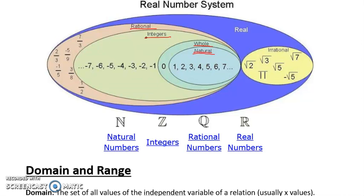And integers. Integers are any number from negative infinity to positive infinity, including zero, that are whole numbers. And then we have rational numbers. Rational numbers are fractions, very simply put.